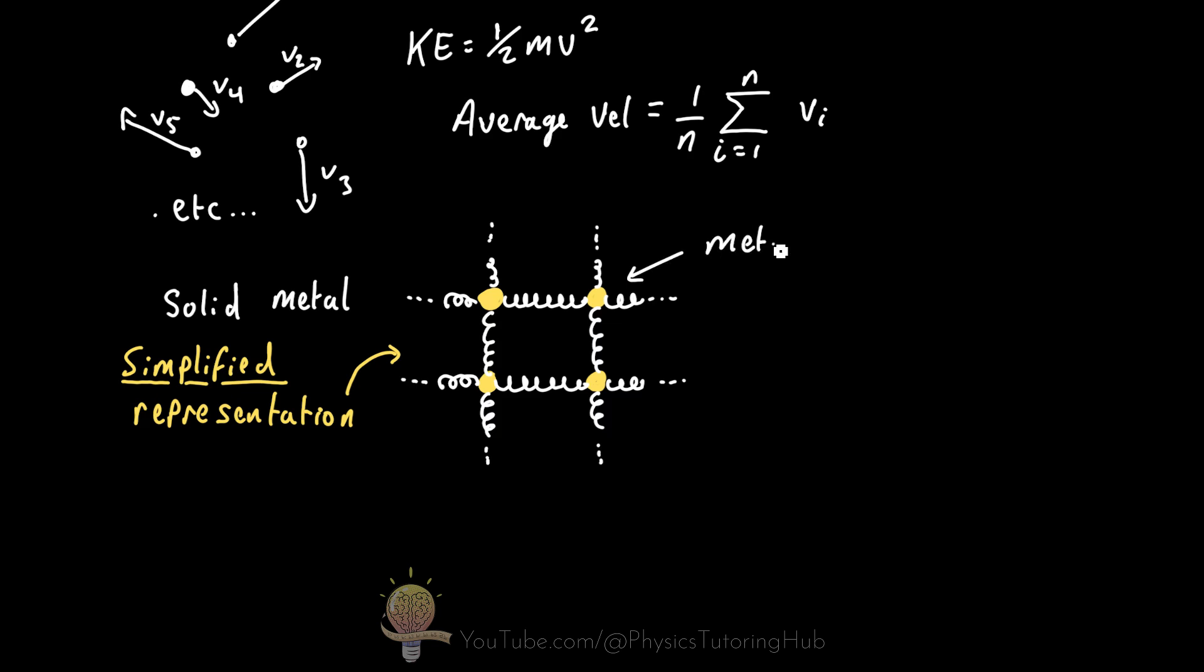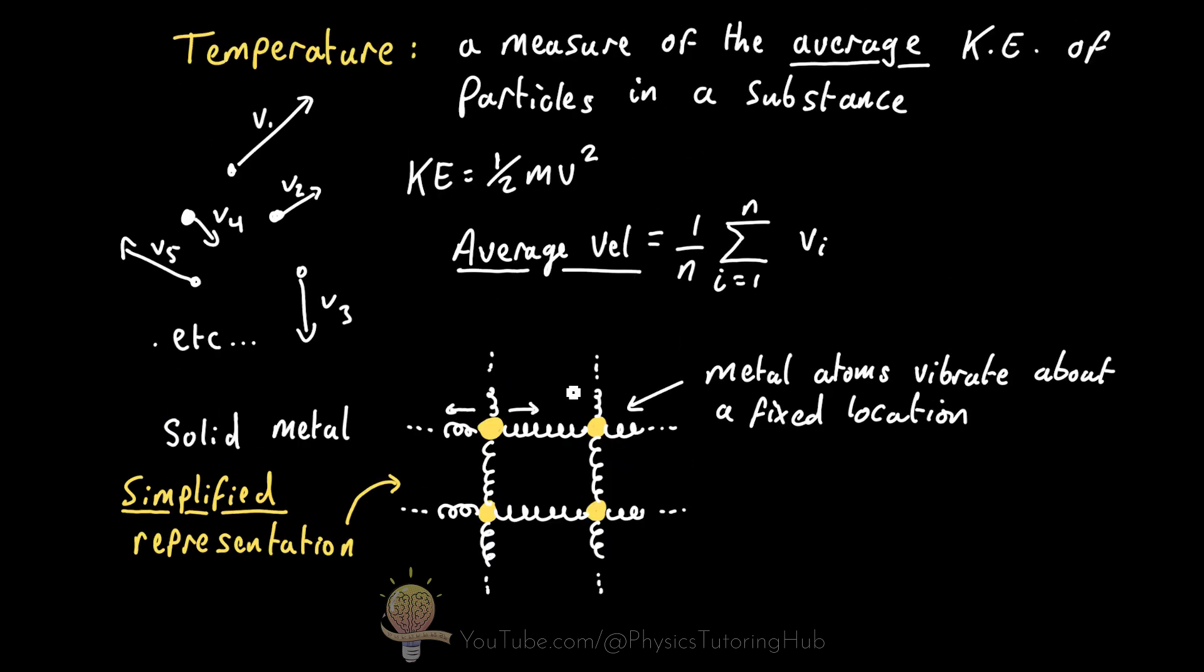But these atoms will have the ability to vibrate as if they're attached to springs. The faster these atoms vibrate, the higher their kinetic energy is. Because remember, kinetic energy is equal to half multiplied by the mass times the velocity squared. The higher this average velocity, the higher the temperature.